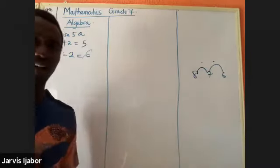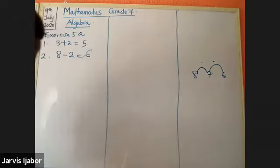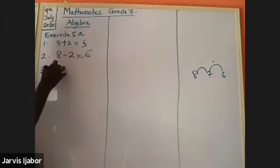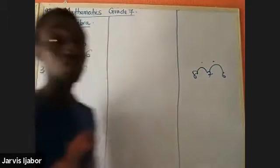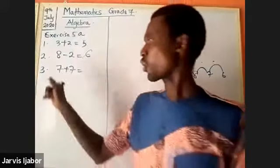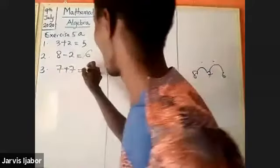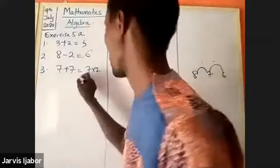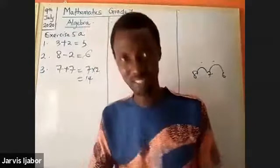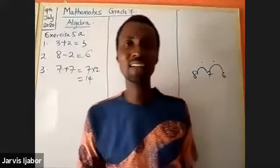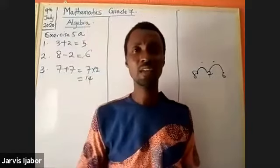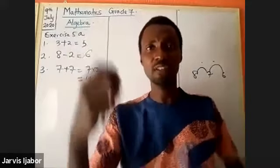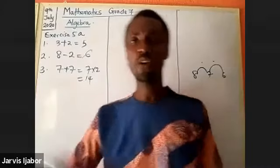Minus means go back, count backwards. Plus means count forward. Question three says seven plus seven. Here there are two ways: seven has occurred two times, so seven times two is fourteen. Or, start from seven and count seven steps forward: eight, nine, ten, eleven, twelve, thirteen, fourteen — the answer is fourteen.